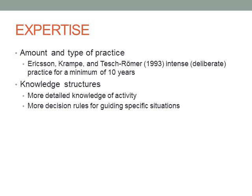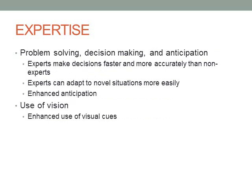Experts also have great knowledge structures. They really know what they're doing — not necessarily in a scientific sense, but in an intuitive sense. They have very good organization around what they're doing, what they're trying to achieve, and the strategies involved. They also have more decision rules for guiding specific situations. These rules become sort of automatic: as soon as they see a situation, they already have a pre-determined rule for dealing with it. And when there's a novel situation, they can recognize it and have a better chance of coming up with a strategy.